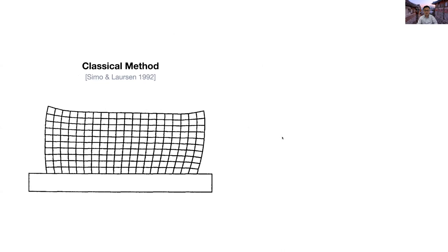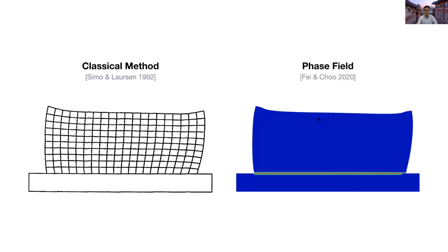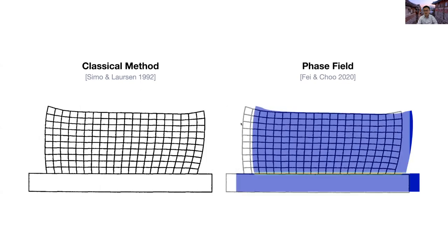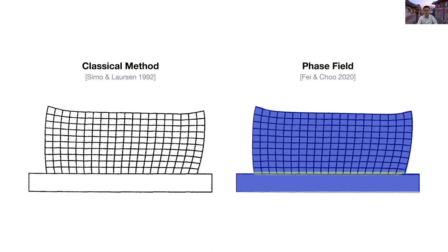This is the deformed shape of the problem simulated by the classical finite element method. And here is our phase field results. And you can see that these two results look very similar. And indeed, they are nearly identical, as you can see now.